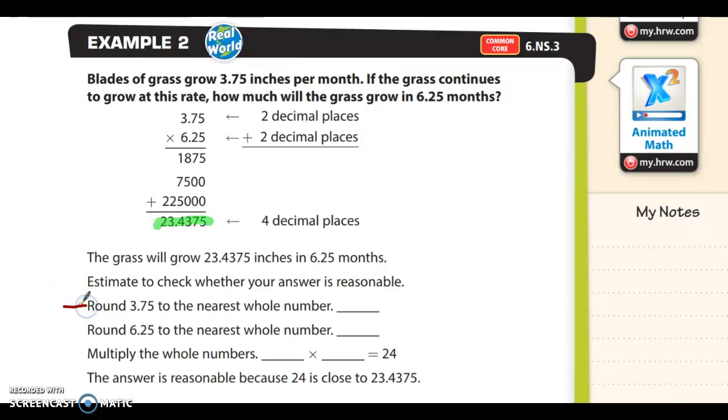It says round 3.75 to the nearest whole number, round 6.25 to the nearest whole number, and then multiply those whole numbers. 4 times 6 is 24. And our answer, our actually calculated answer was 23 something, 24 is close to 23.